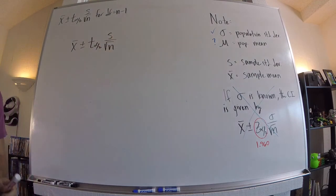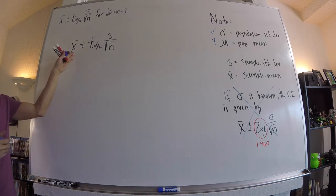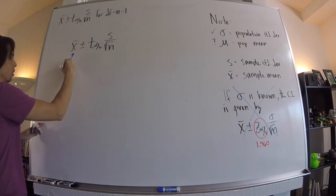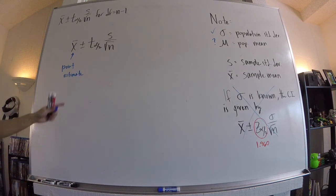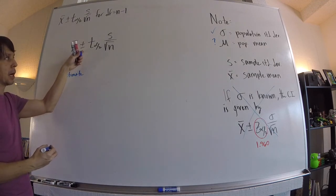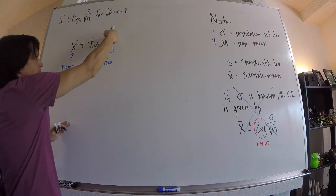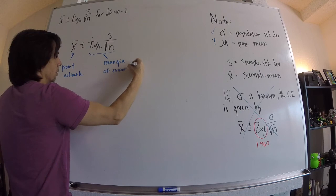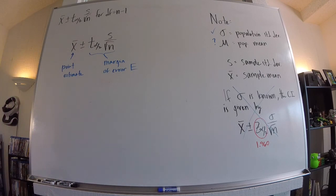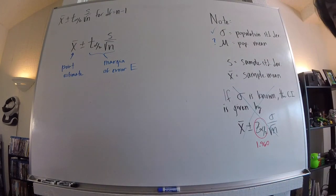The margin of error is the thing that you add and subtract from your point estimate. The x-bar is called your point estimate — whatever value we get is our best guess for the unknown mu — and we make an interval by adding and subtracting the margin of error. The margin of error is T_alpha/2 times S divided by the square root of N, still denoted with capital E.